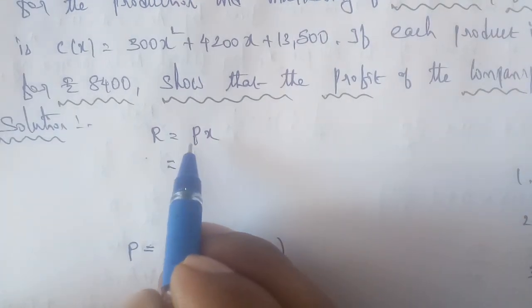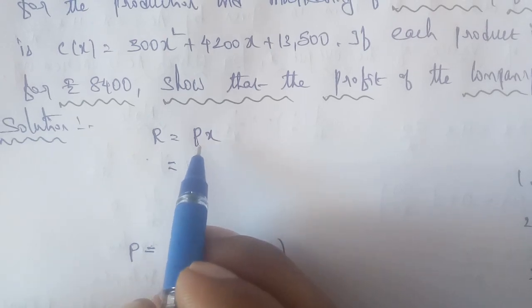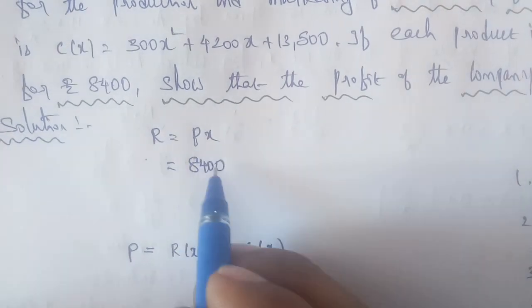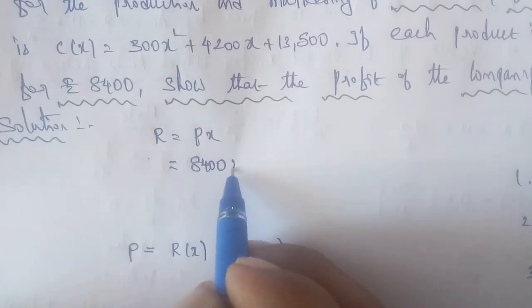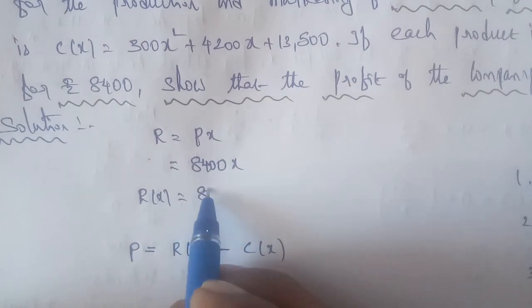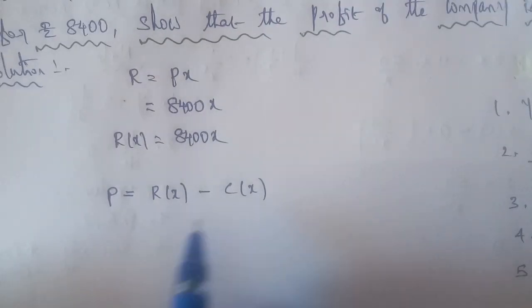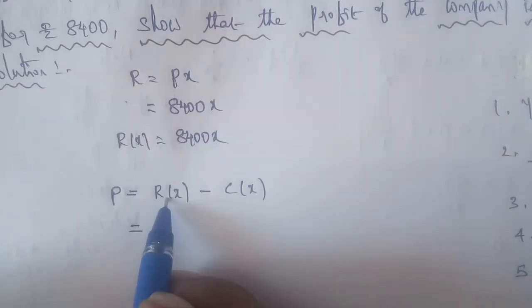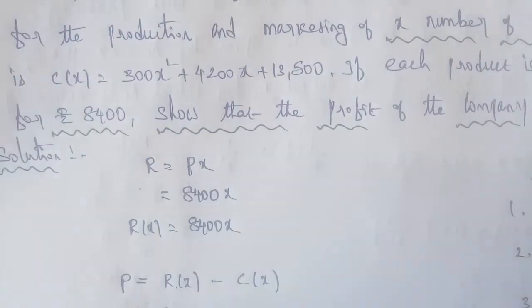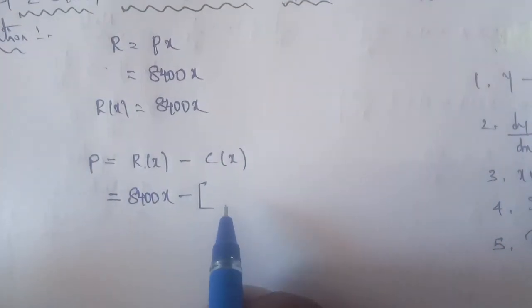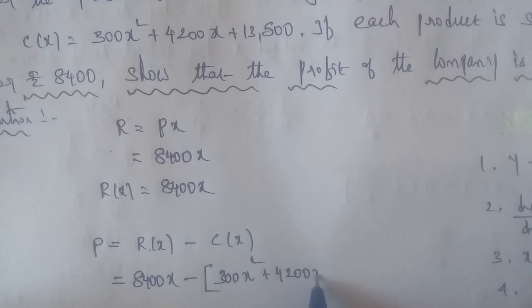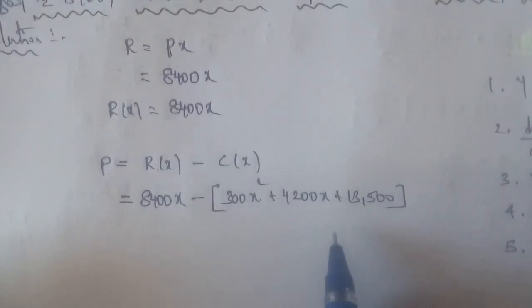The revenue formula is R equals P times X, where P is the price. Since the television rate is 8400 and X is the number of televisions, R of X equals 8400 into X. Now applying this, P of X equals R of X minus C of X, so it is 8400X minus C of X.